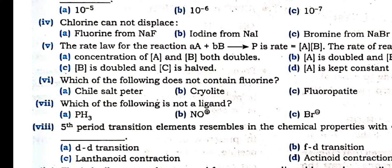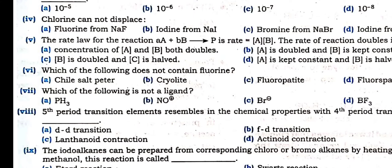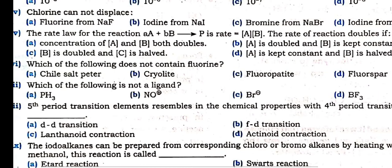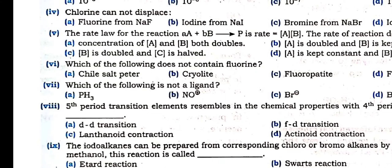Seventh question: which of the following is not a ligand? As you know, from the chapter I taught. NO⁺, Br⁻, BF₃ — all can act as a ligand. PH₃ cannot act as a ligand. Phosphine — PH₃ is a phosphine — cannot act as a ligand.